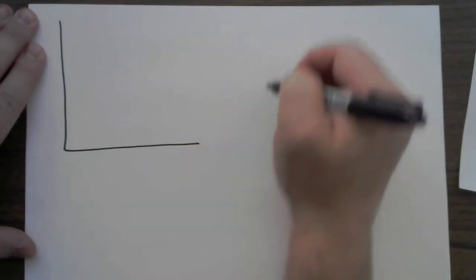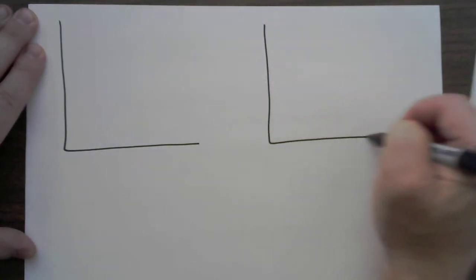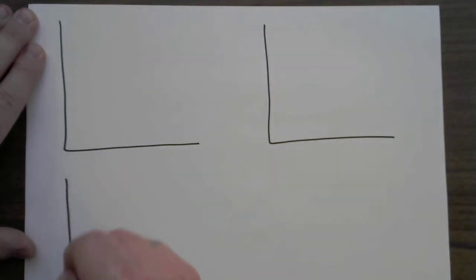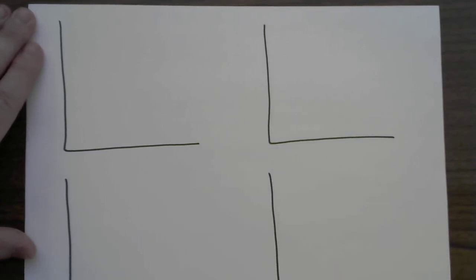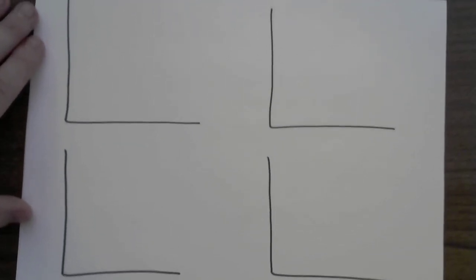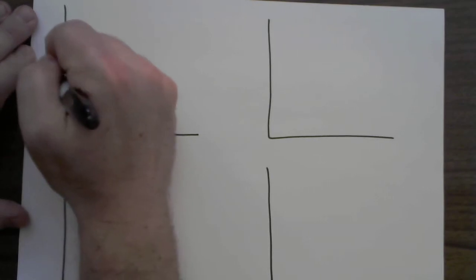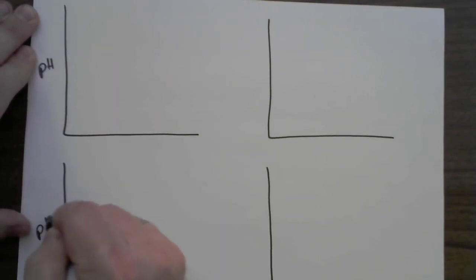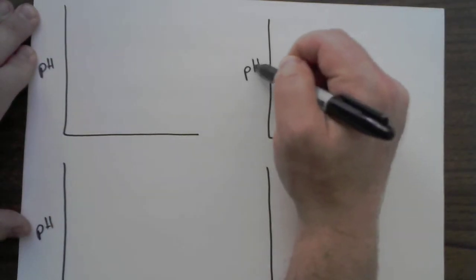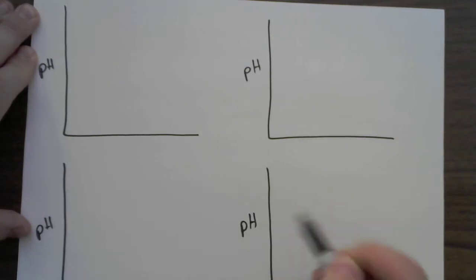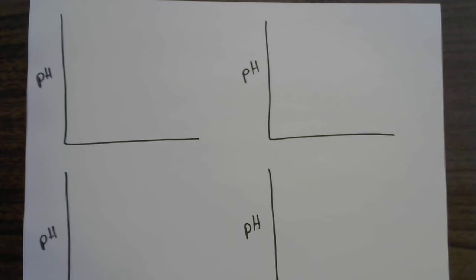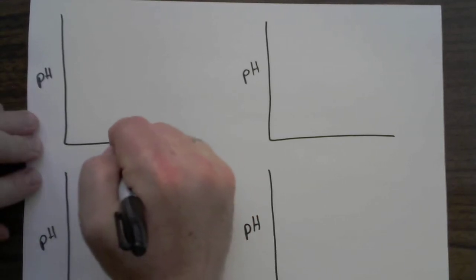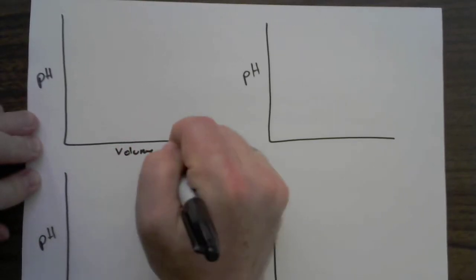A titration curve always has a very consistent beginning for what the axes look like on our charts. I'm always going to have the pH over here for all of these, and then regardless of the combination of acids and bases that we're using, we're always going to talk about the volume added.